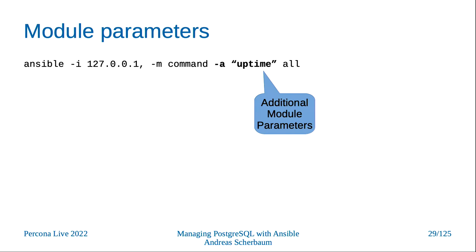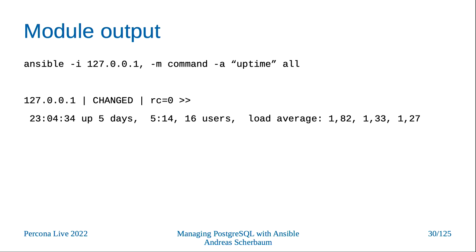Let's see another example. Again we have the inventory as a Python list. Now we pick the command module, which runs a Unix command on your remote host. Whatever Unix command you want to run, it runs in parallel on all specified hosts — in this case only localhost — and you specify what command to run, in this case just uptime. We get an output, and something changed. Why? Because Ansible doesn't know that the uptime command doesn't change anything. By default, anytime you run a shell command, Ansible assumes something was changed. We get the output of the command — this host is up for five days, with a little load because this is localhost running an Ansible playbook right now.